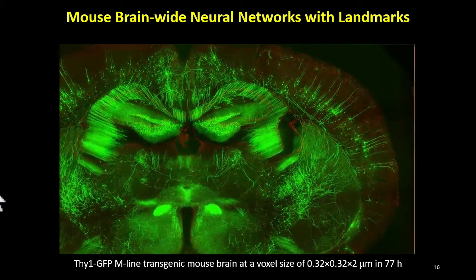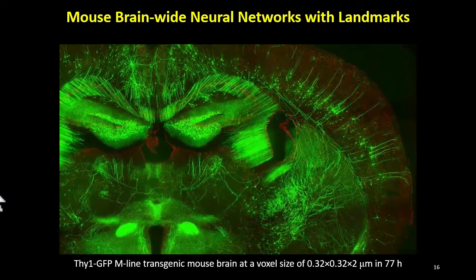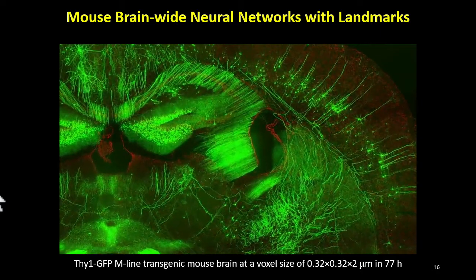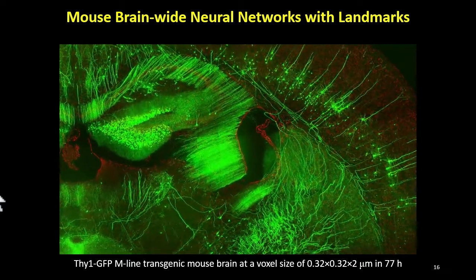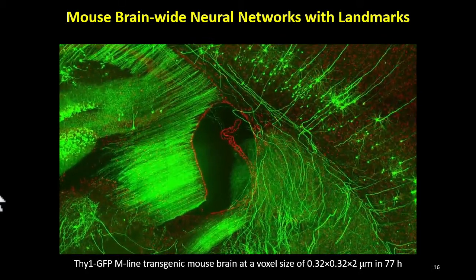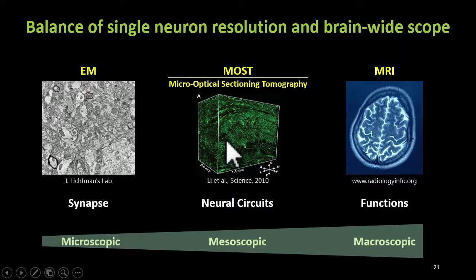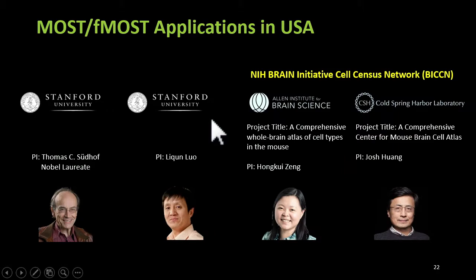In summary, we think we have filled the gap between electron microscopy and MRI by providing a mesoscopic level imaging with quite large areas. We have collaborations in the United States, including two groups from Stanford, the Allen Brain Institute, and Cold Spring Harbor Laboratory.